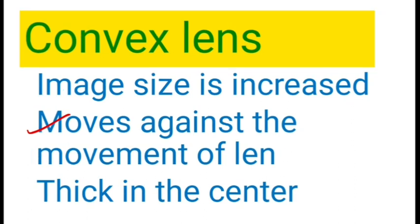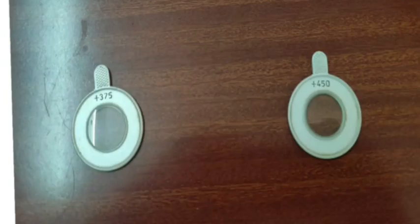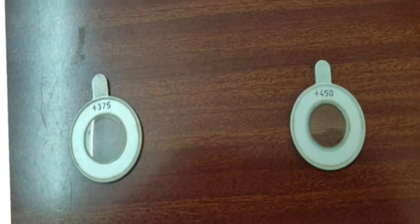Whenever you want to differentiate whether it is a convex lens or the concave lens, we have to concentrate on three things: the image size, the movement of the image with the movement of the lens, and the thickness of the lens. With the convex lens, the image size is increased, the image moves against the movement of the lens, and it is thick in the center. These are the convex lenses which have the plus sign, and the function of the convex lens is to converge the light rays — these are converging lenses.